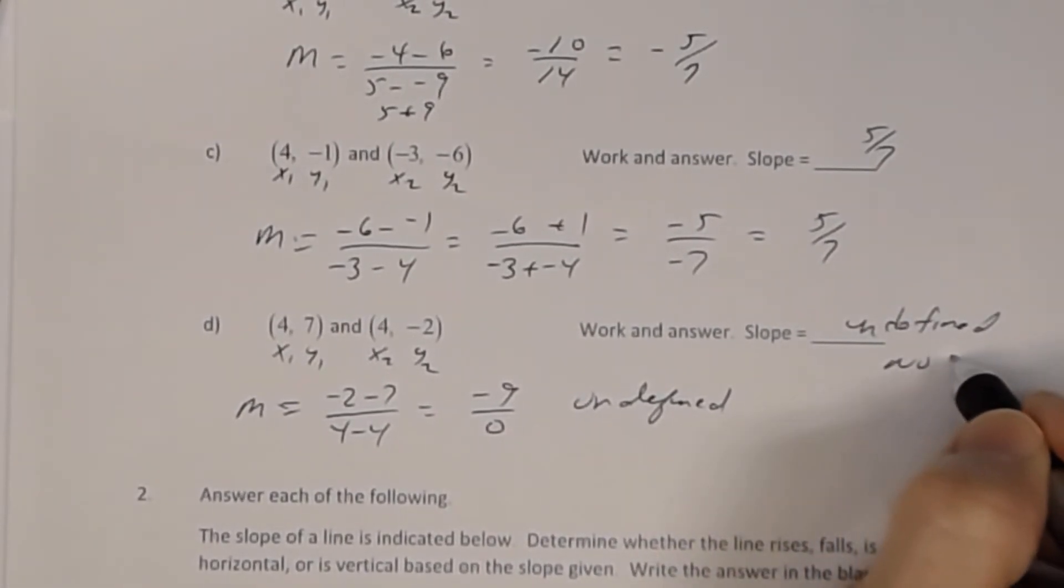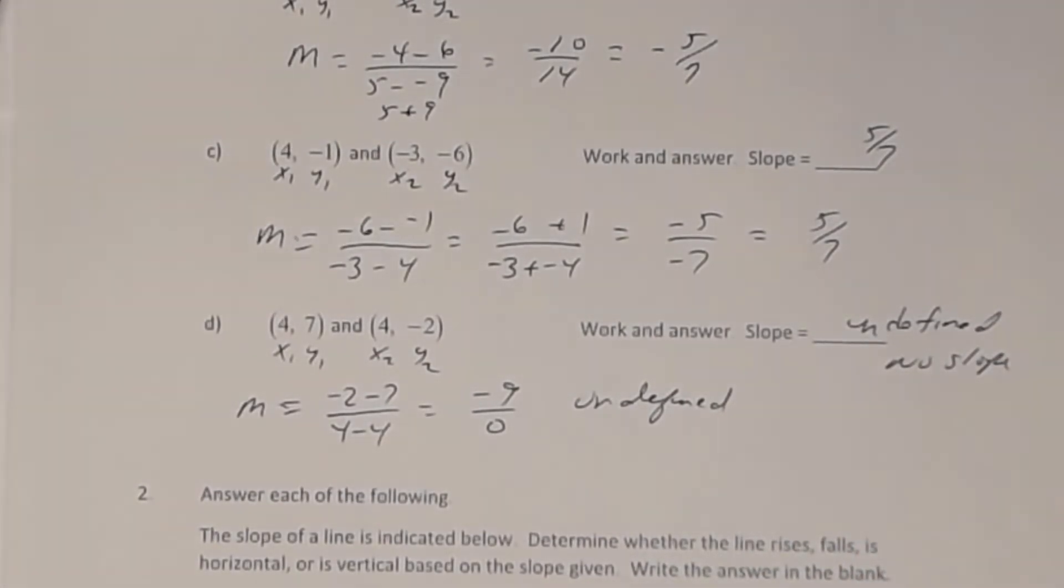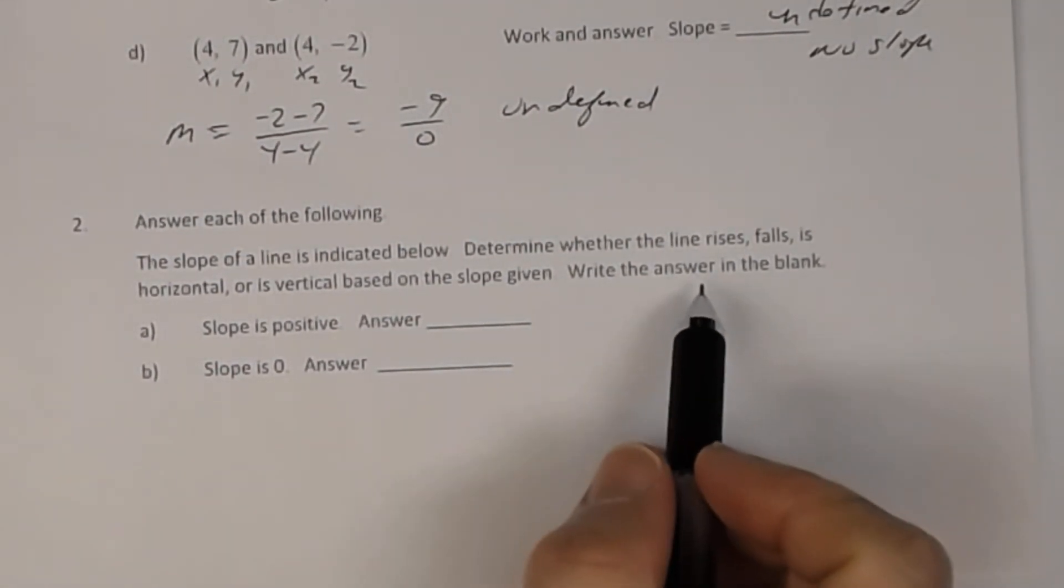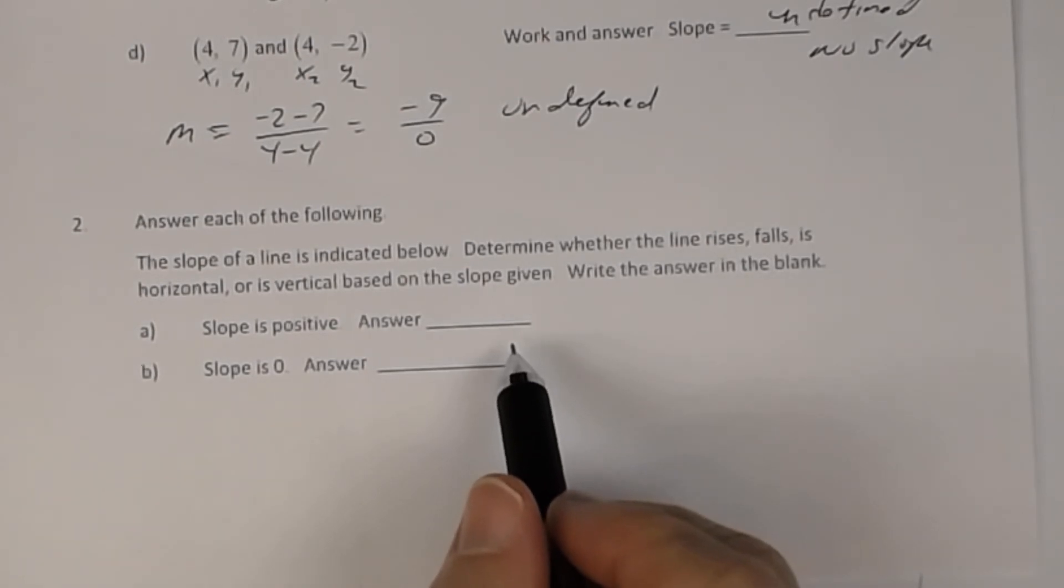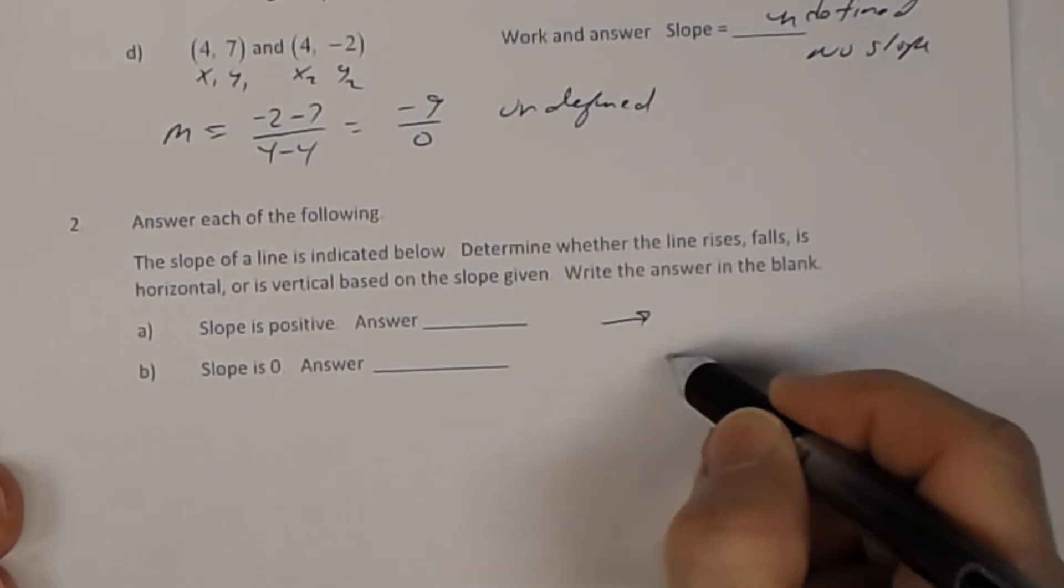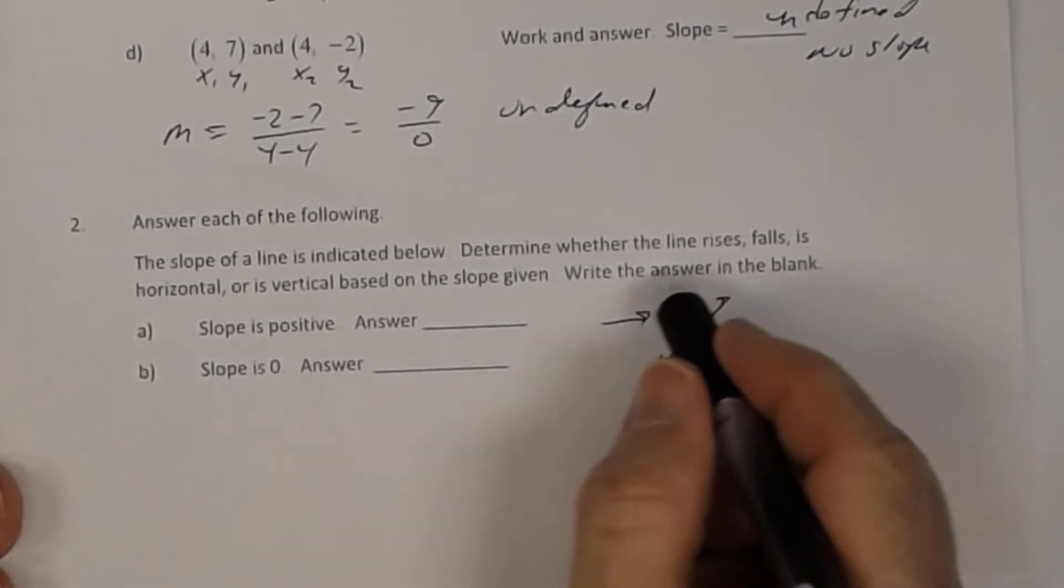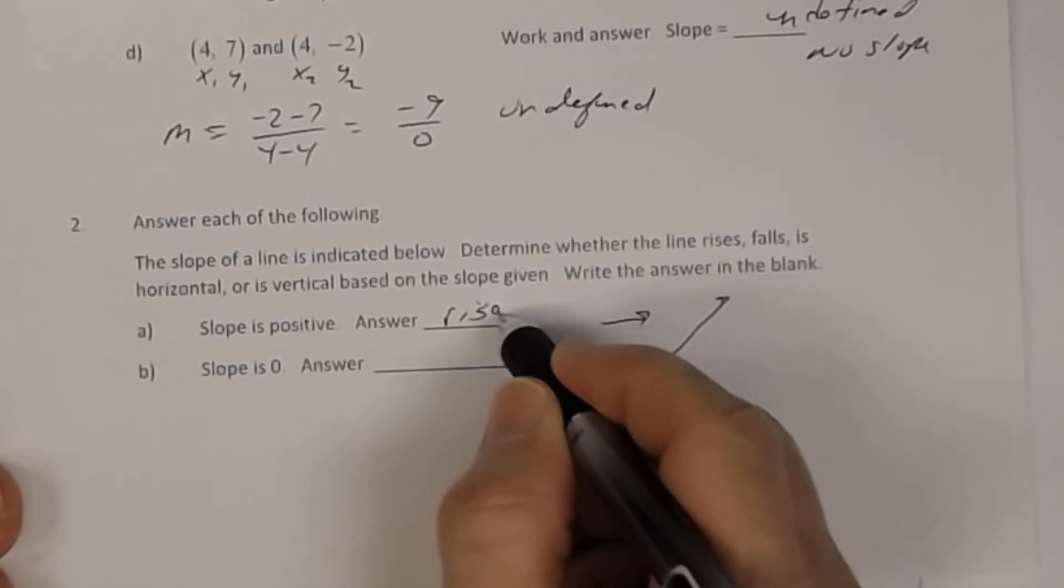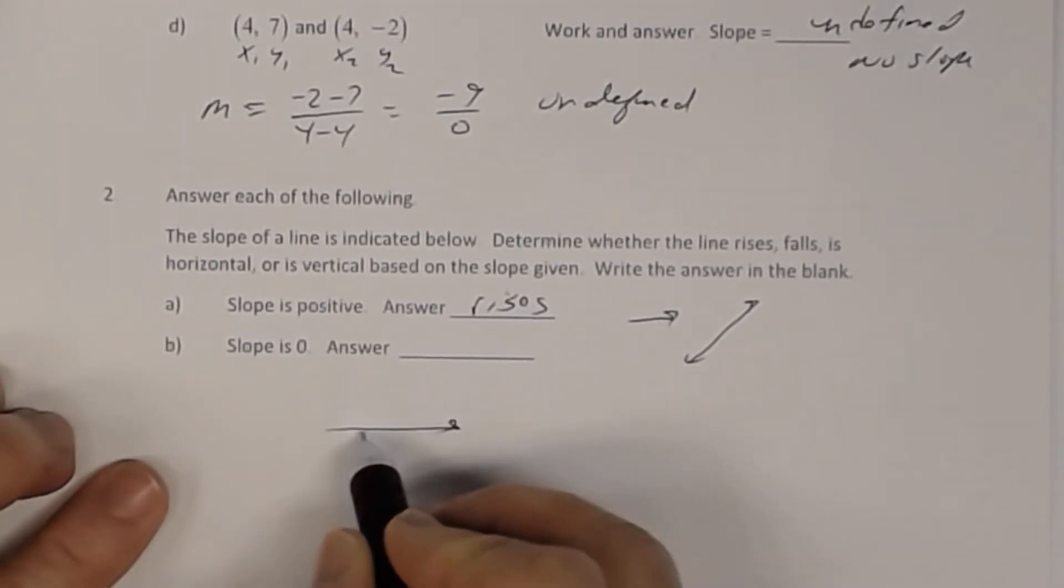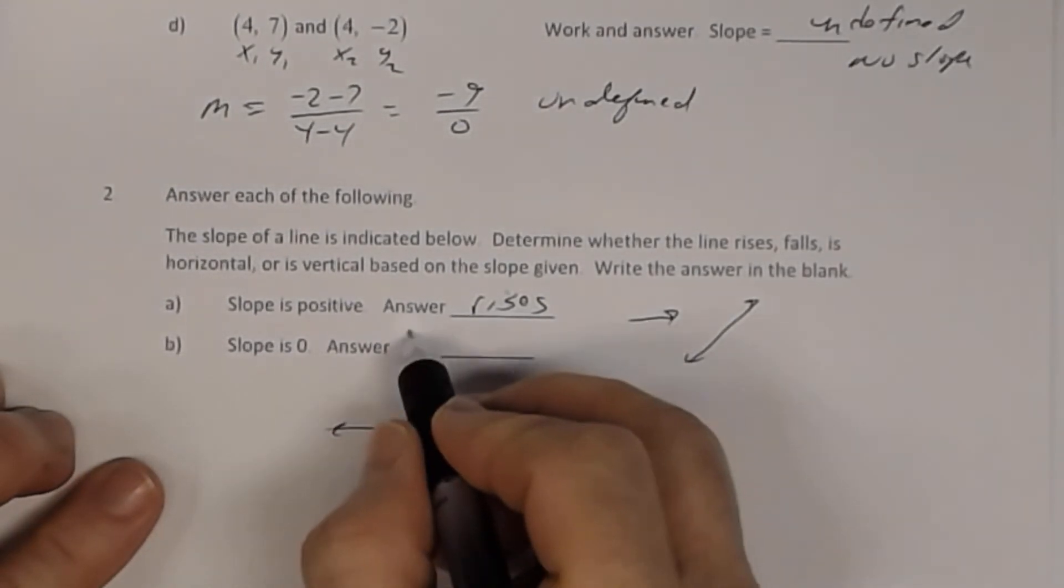Number two says: The slope of a line is indicated below. Determine whether the line rises, falls, is horizontal, or is vertical based on the slope given, and write the answer in the blank. If the slope is positive, that means your line is rising, so the line rises. If the slope is zero, that means your line is horizontal, so the line is horizontal.